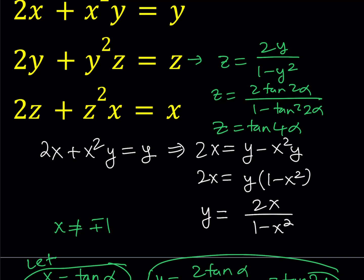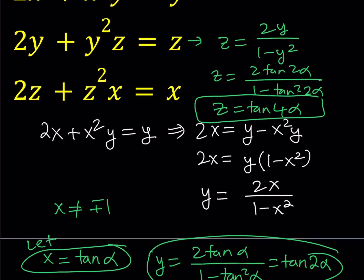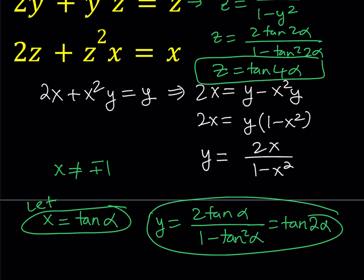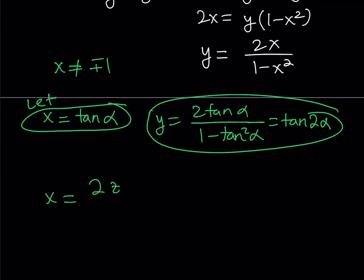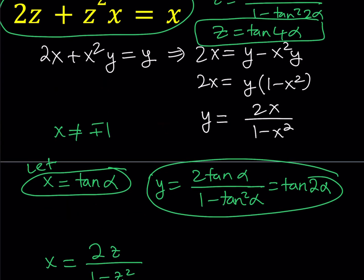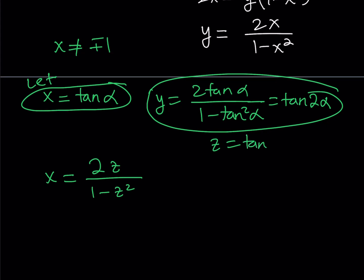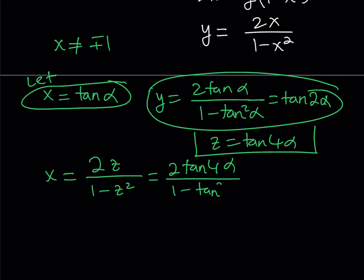We're not done yet because we still have one more equation to handle. We have z equals tangent 4α. The third equation gives x in terms of z: x equals 2z over (1 minus z²). Since z equals tangent 4α, substituting gives 2 tangent 4α over (1 minus tangent² 4α). The double angle formula appears again, giving tangent 8α. But we already have a value for x — isn't that tangent 8α?